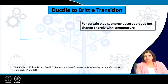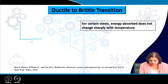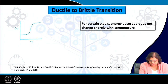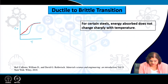For certain steels the energy absorbed does not change very sharply, while for some cases there is a very drastic change in the failure mode. Plotting Cv versus T, we can see that for some steels there is a very drastic change, whereas for others, although starting from more or less the same values, it varies over a wider range.